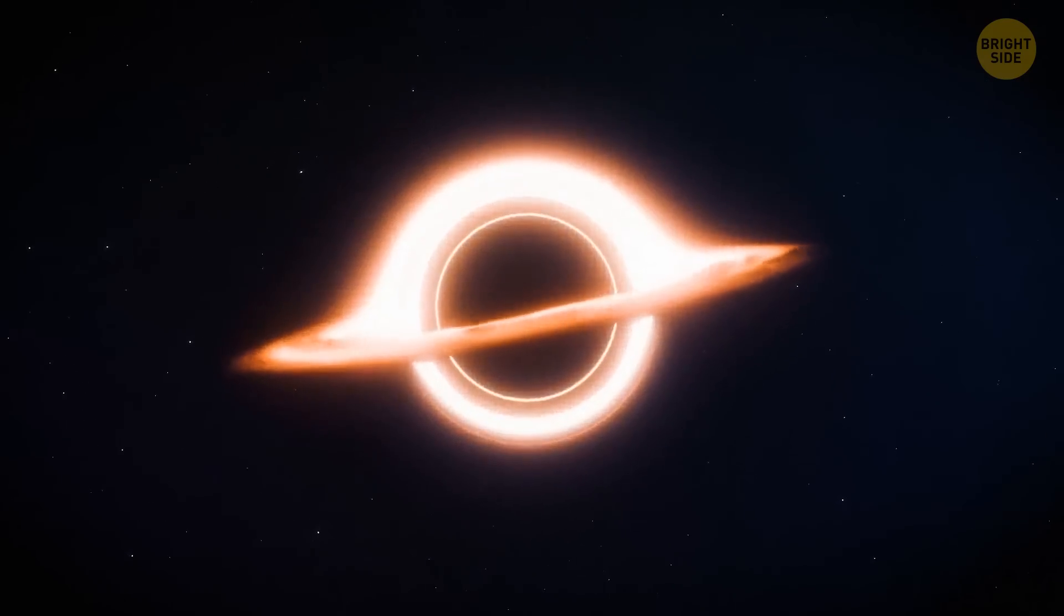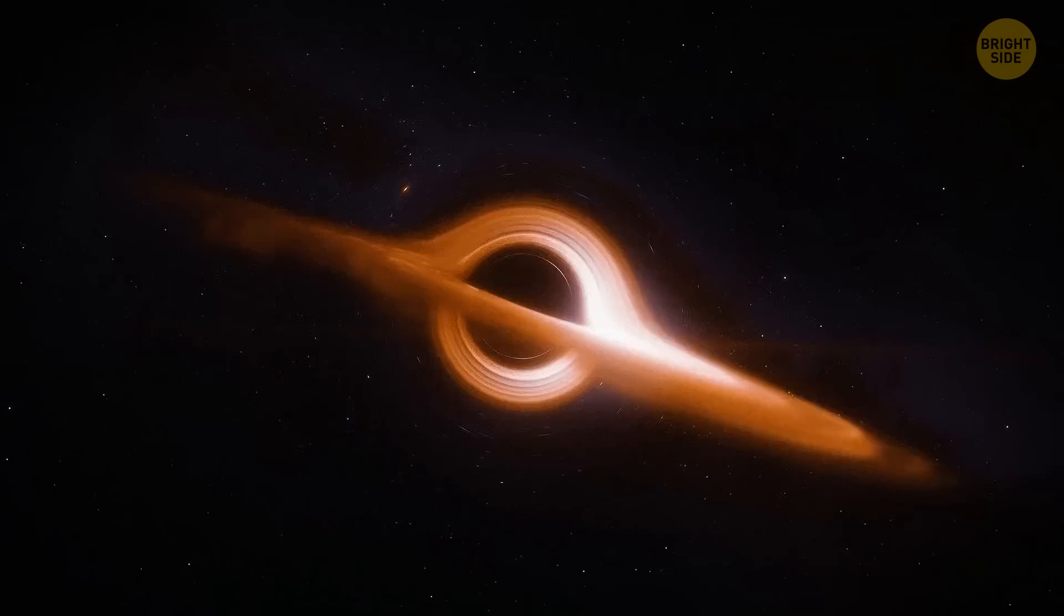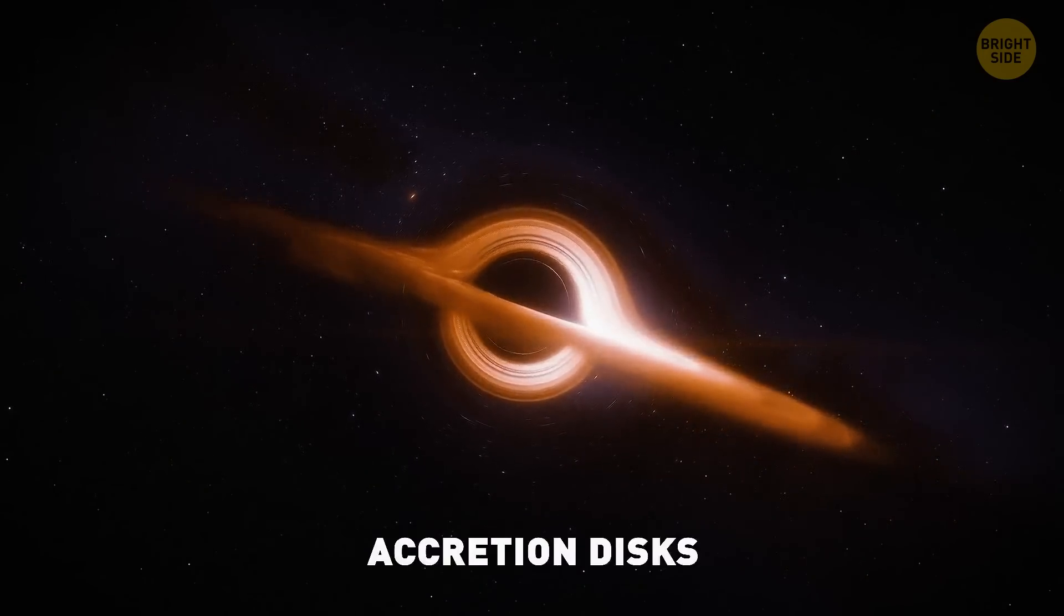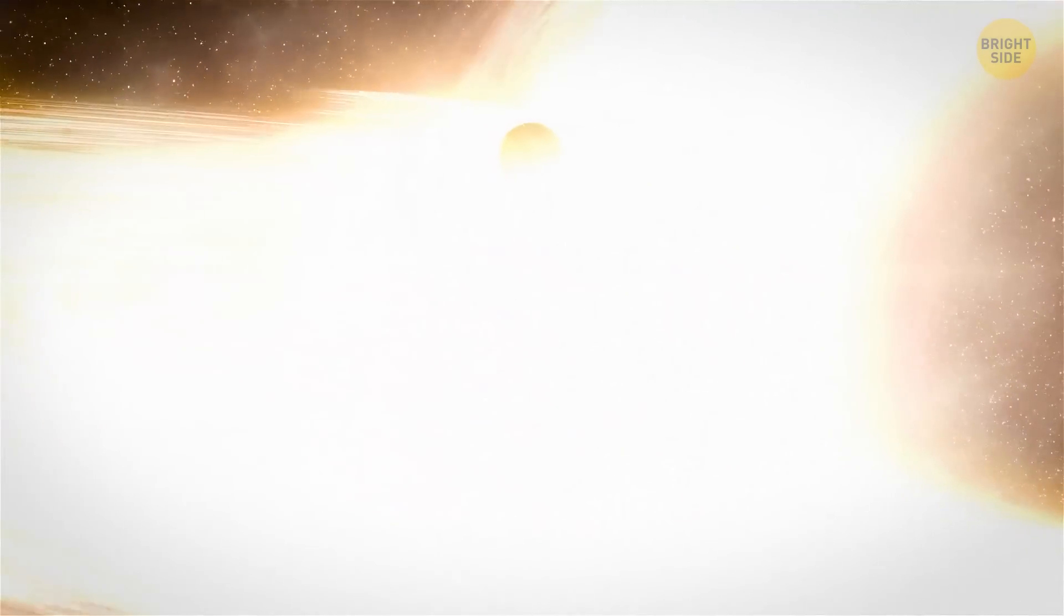Such feeding black holes are usually surrounded by swirls of gas and dust falling inside them. Such swirls are also called accretion disks. The gravitational force of a black hole heats this matter, which makes the disk shine bright like a diamond.